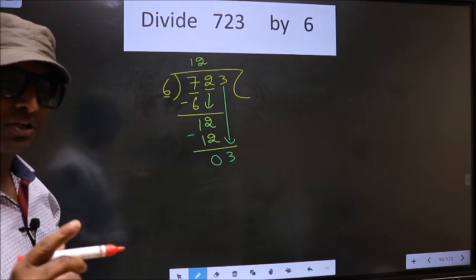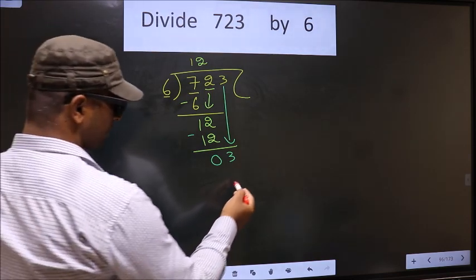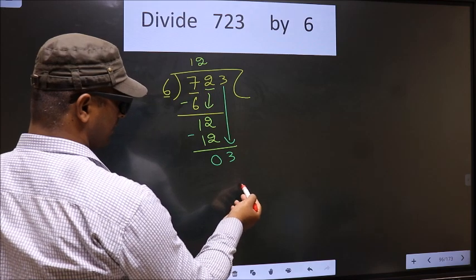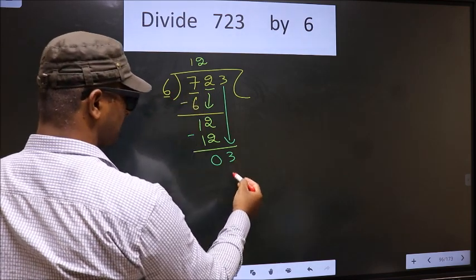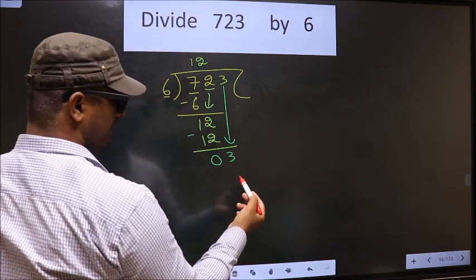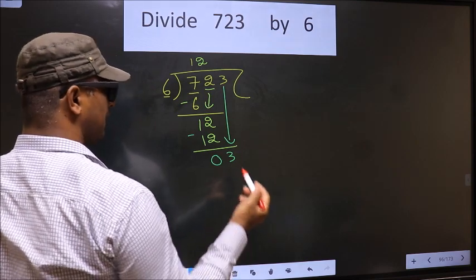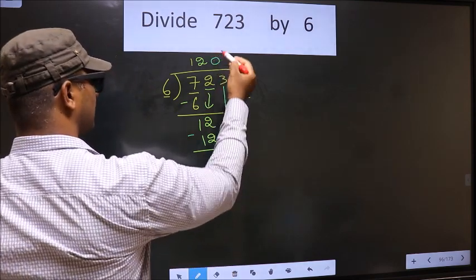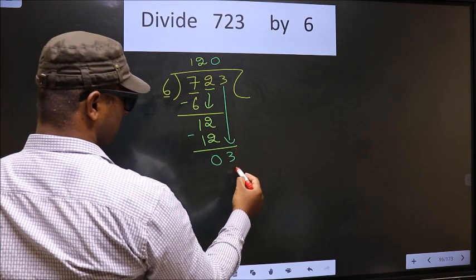Instead, what you should think of is what number should we write here. If I write 6 here, that is larger than 3. So what we do is we take 0 here. So 6 into 0, 0.